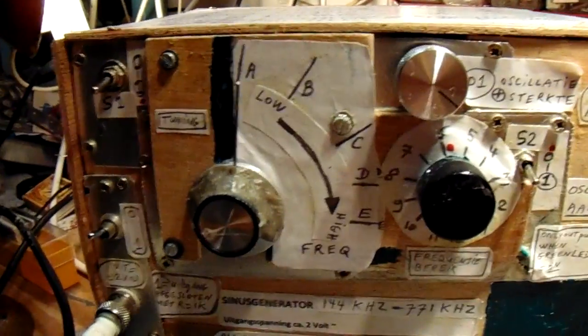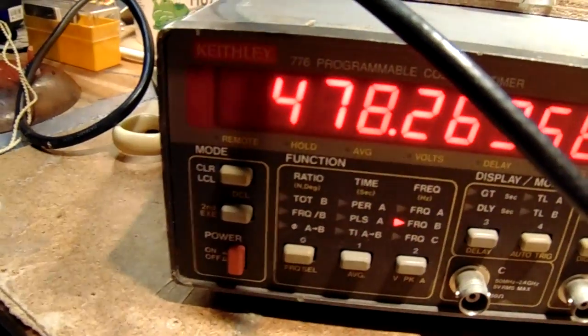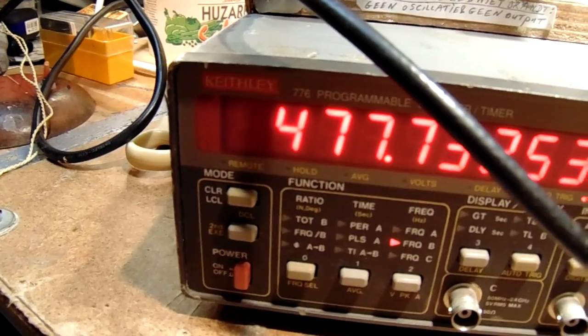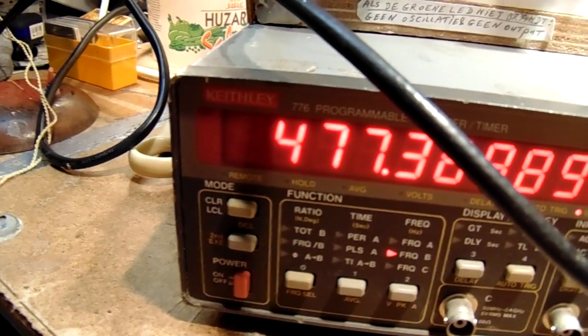Here is the oscillator. The frequency counter. You can see that I'm sending now into the IF coil a frequency of 477 kHz.